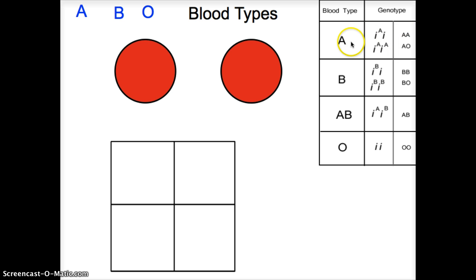And the reason for that is A is dominant over O, and B is dominant over O. But A and B are co-dominance. They share. No one wins. That's why they have their own separate blood type.